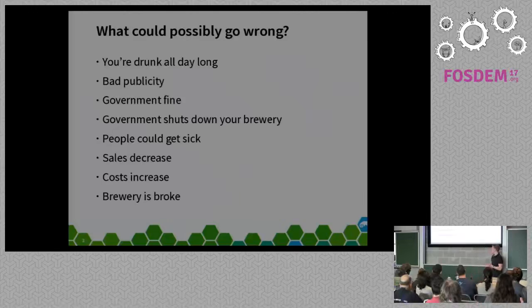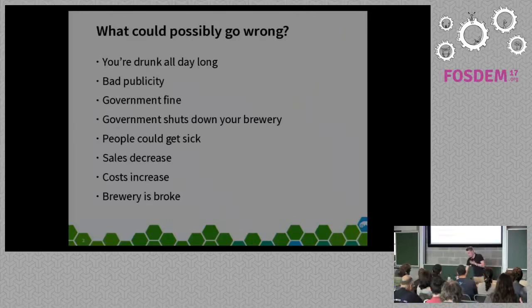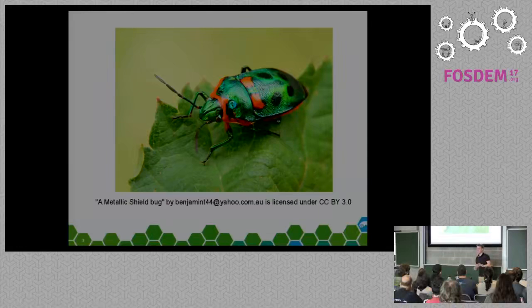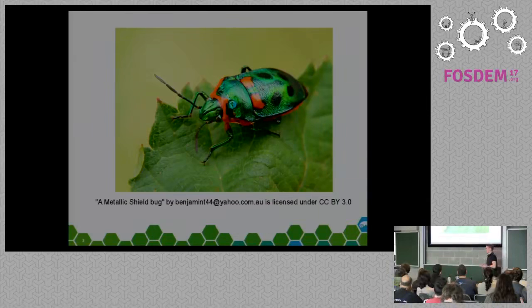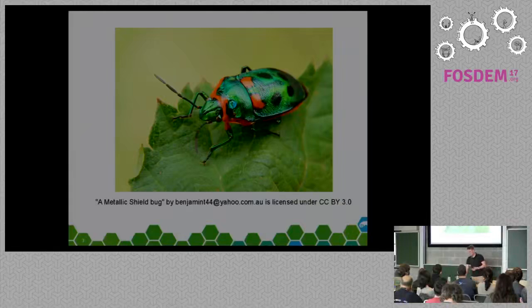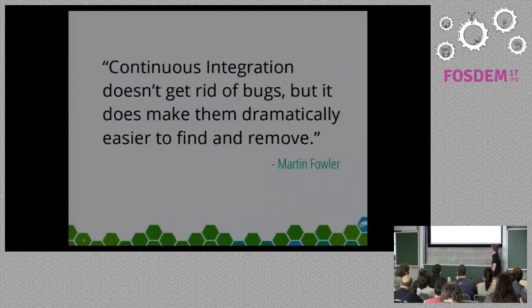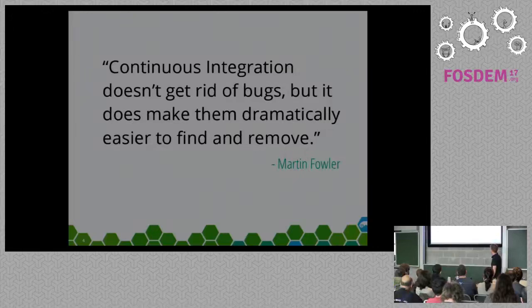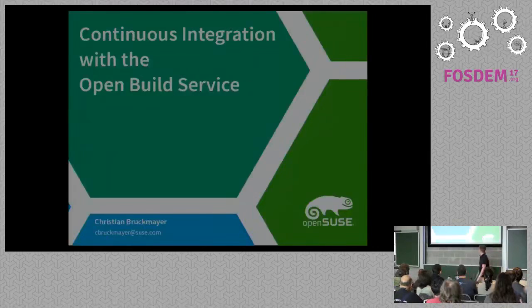In software it's also important to have high quality. How do we measure quality in software? One measurement is that the software should meet all your requirements, which also means it should be free of bugs — software failures. And how do we make sure that we don't introduce bugs? I would like to cite Martin Fowler. Continuous integration doesn't get rid of bugs, but it does make them dramatically easier to find and remove. This is the topic of my talk: continuous integration with the Open Build Service.